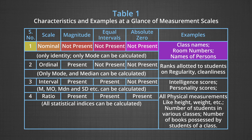Number one is nominal scales. Under the nominal scale, magnitude is not present — we do not take into consideration how much or the extent of the quality. It does not have equal intervals, and it does not have an absolute zero point. The only thing we do is give names: room numbers, names of persons, house numbers, roll numbers, and so on. The nominal scale does not have any of the three attributes required in a measurement scale.